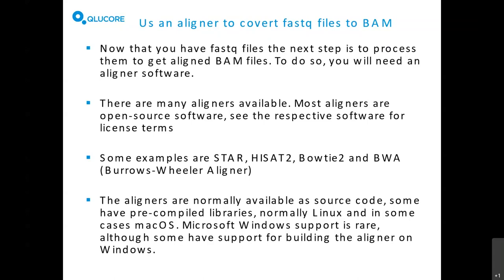Microsoft Windows support is quite rare on a native basis, but there may be support for building the aligner on Windows. In some cases if you'd like to run on Windows, you can install a Linux layer on top and run the aligner in that environment. In this webinar we'll have a look at it on macOS. Since macOS is not that far from Unix, if there is support for Linux, those who created the aligner may have also made a macOS version and in some cases pre-compiled it.